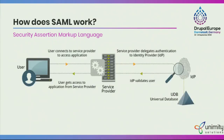How does SAML work? First, the user visits the website and connects to the service provider to access the application. The service provider delegates authentication to the identity provider. The identity provider checks the user identity against the identity database — which can be LDAP or Active Directory — and verifies the user. Then it passes the SAML assertion about the user back to the service provider, and the user gets access to the application.